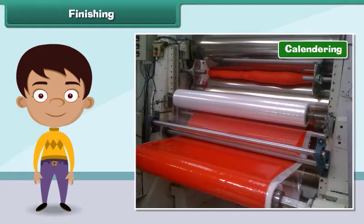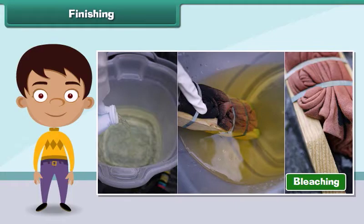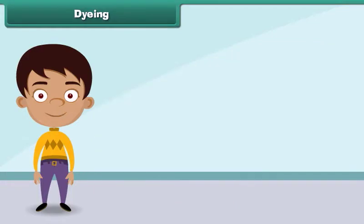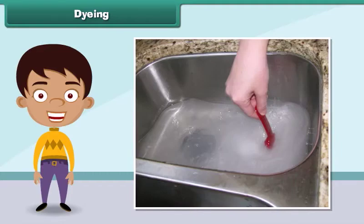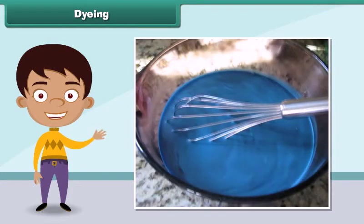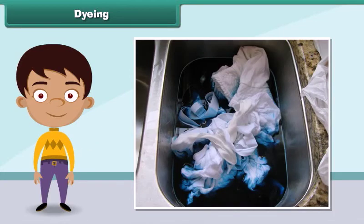The process that improves the appearance and usefulness of a fabric is known as finishing. Some important finishing treatments given to a fabric are: brushing, which removes short and loose fibers from a fabric; calendaring, which improves the smoothness and shine of a fabric; and bleaching, which removes the natural color of raw fabric.